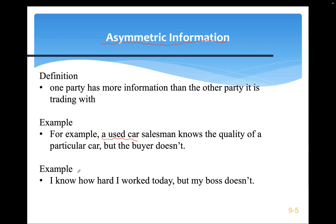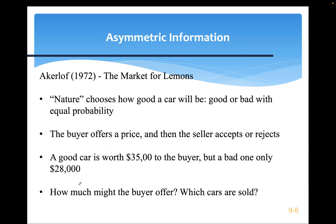Another example: I know how hard I work today, but not necessarily my boss. These two examples show that parties often have different knowledge regarding key information. Asymmetric information was first studied by Akerlof, who won the Nobel Prize for his contribution. This is called the market for lemons — lemons referring to inferior goods.